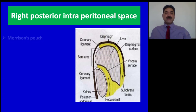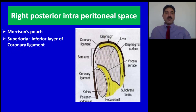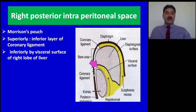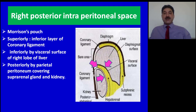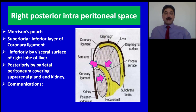The right posterior intraperitoneal space is also called Morrison's pouch or hepatorenal pouch of Morrison. It is bounded superiorly by the inferior layer of the coronary ligament, inferiorly by the visceral surface of the right lobe of the liver, and posteriorly by parietal peritoneum covering the suprarenal gland and kidney. It is called the hepatorenal pouch because it lies between the anterior surface of the kidney and the inferior or visceral surface of the right lobe of the liver. If we place our fingers inside this space, the fingertips touch the inferior layer of the coronary ligament, the dorsum of the hand touches the undersurface of the right lobe of the liver, and the palmar aspect of the hand rests on the anterior surface of the right kidney.